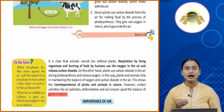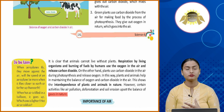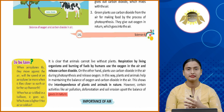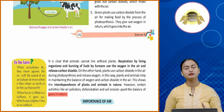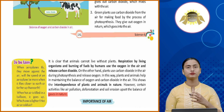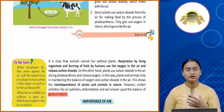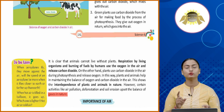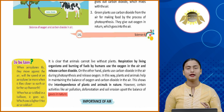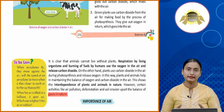Plants take in carbon dioxide for photosynthesis and release oxygen. Animals and human beings take in oxygen and release carbon dioxide. In this way, animals, human beings, and plants are interdependent — the cycle keeps moving.